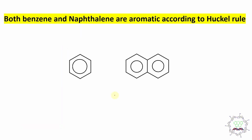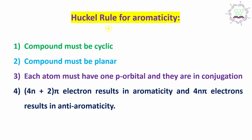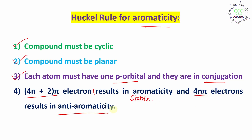I am talking about the bond fixation of naphthalene. We know that both benzene and naphthalene are aromatic, meaning delocalized, according to Huckel rule. Huckel rule is a condition for aromaticity — a compound will be aromatic if the compound is cyclic, it is planar, each atom must have one p orbital in conjugation together, and if it has 4n+2 number of pi electrons, it will be aromatic, meaning stable. If it has 4n number of pi electrons, it is anti-aromatic, meaning unstable.